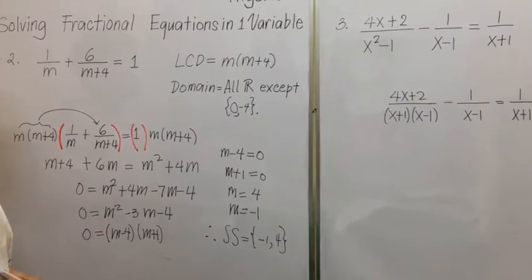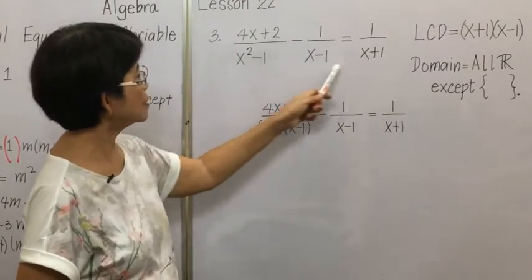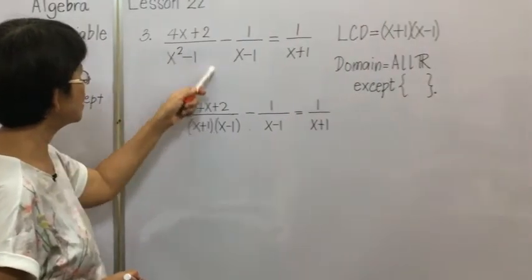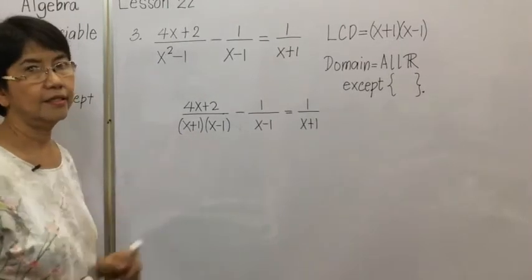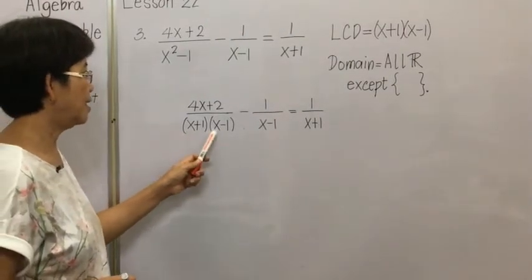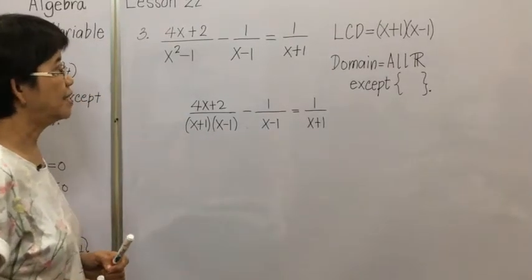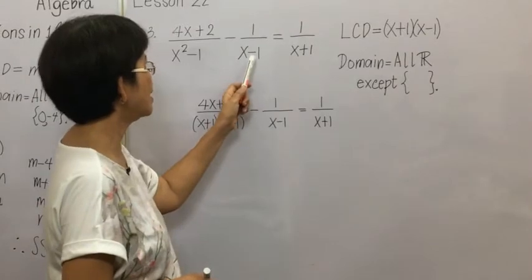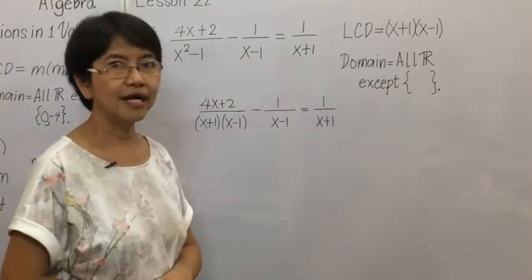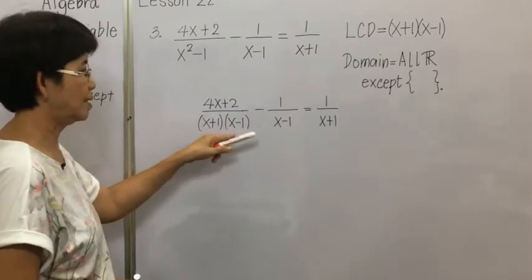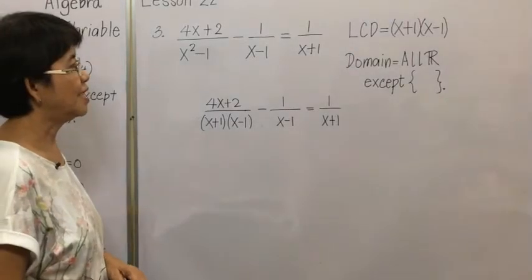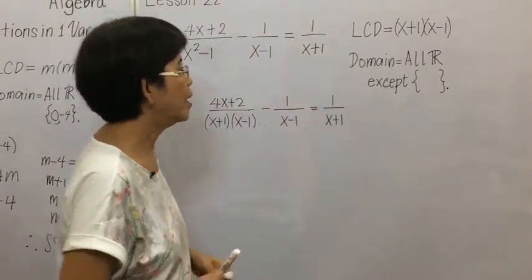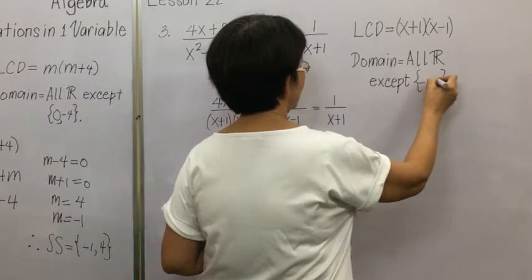For example number 3, we look at the denominators. Factoring the denominator of the first fraction gives x plus 1 and x minus 1. The LCD is x plus 1 times x minus 1, since we also have x minus 1 and x plus 1 as denominators in the other terms. Equating the LCD to zero gives the exceptions x equals negative 1 and x equals 1.